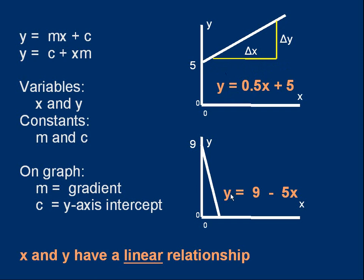On the lower graph, the intercept will be 9. It crosses the y axis when y equals 9. And the gradient will be minus 5. It's a downhill negative gradient. And if we worked it out, rise over run would get minus 5.